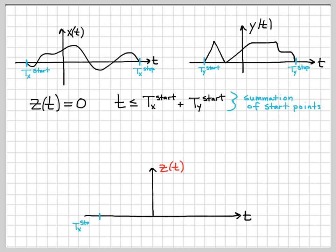So if I was going to plot z of t, this final quantity, I now know that for all times on the time axis before time t sub x start plus t sub y start, that z of t is going to be 0. So now on my time axis, I can go ahead and just write that in. I know z of t is going to be 0 there.